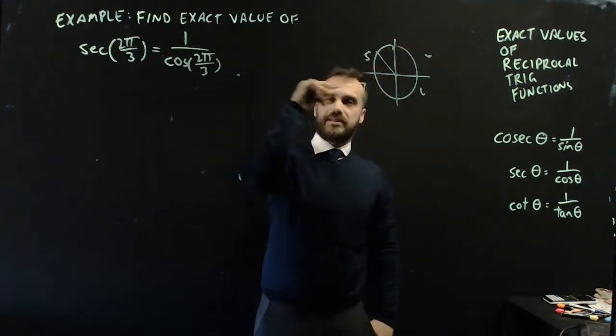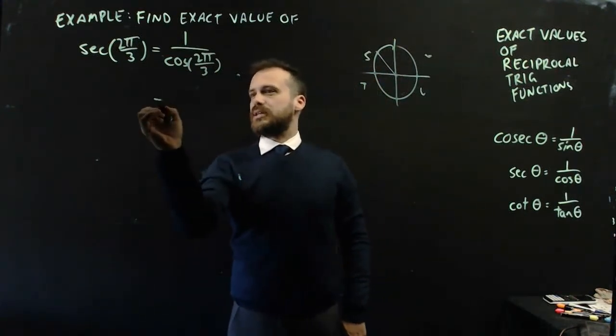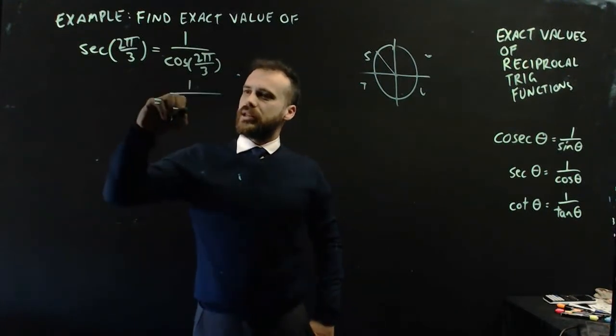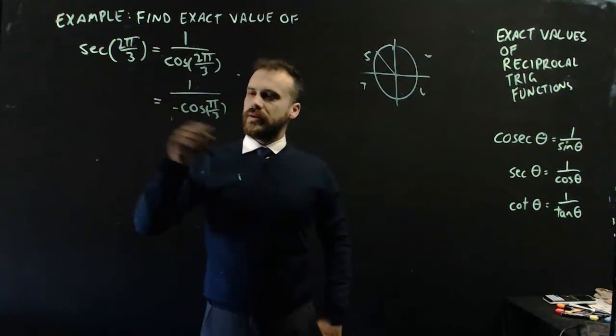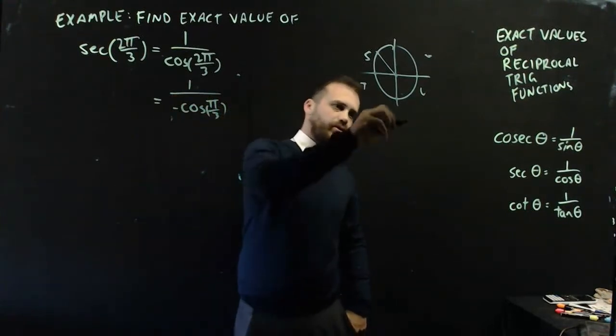Now, what's cos 2π/3? Well, it's in the second quadrant. CAST - it's going to be negative. So, I can say that that's equal to 1/negative cos π/3. And what's cos π/3?